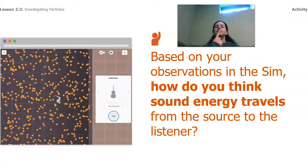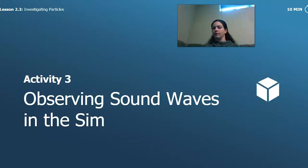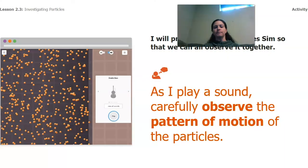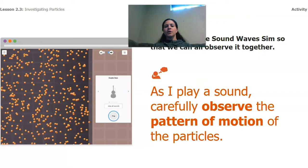Now, based on our observations of the sim, how do you think sound energy travels from the source, like the drum, to the listener—like let's say our ear was over here? How is that sound getting from the drum to our ear? We're going to look one more time at the sim, so I'm going to play a sound.